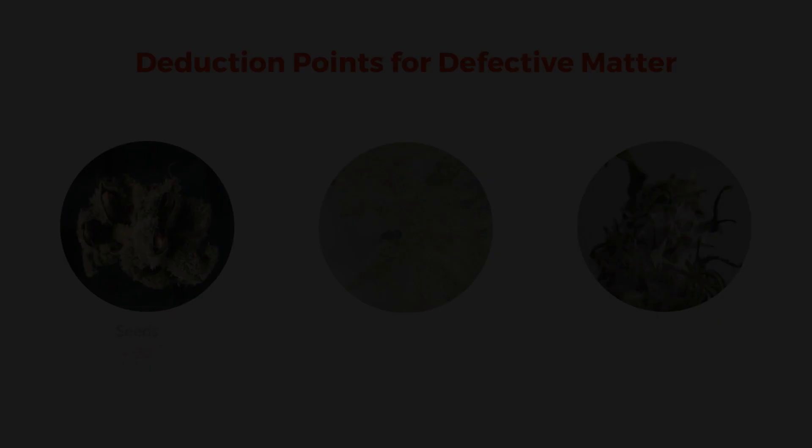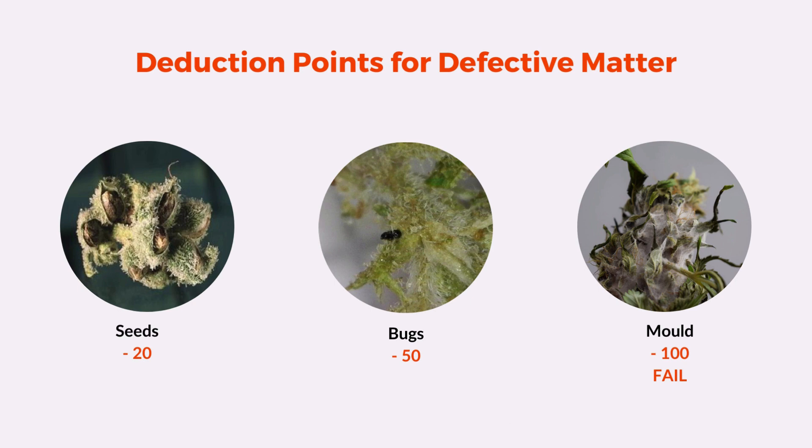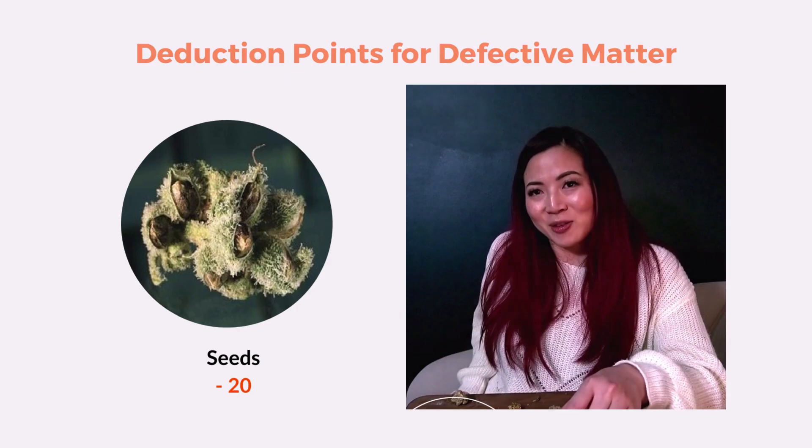If I find anything that doesn't belong on my bud — like hair, bugs, seeds, or mold — I'm going to deduct points based on severity. Anything more than two bugs would fail, and mold would definitely go in the garbage. If I see a seed here and there, it's not really a big deal — I might just keep that for later.